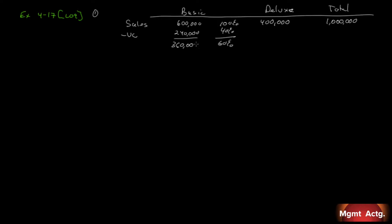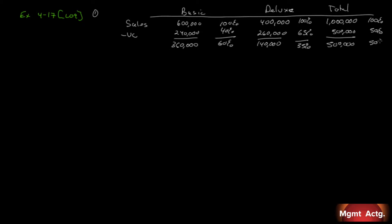That leaves a contribution margin of $360,000 for basic. For deluxe, letting sales be 100%, the contribution margin ratio is 35%, making the variable expense ratio 65%. 65% of $400,000 is $260,000, leaving a contribution margin of $140,000. Adding across: $240,000 plus $260,000 equals $500,000 total variable costs, and $360,000 plus $140,000 equals $500,000 total contribution margin, which is 50%.